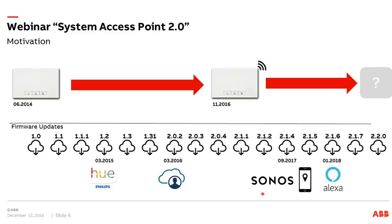However, we also have to say that these features are taxing the resources of the Free at Home system access point — from processing and from memory. So we said we have to introduce new hardware, to lay the foundation for continuous improvement, because we were coming to our limits. We need a new system access point with better hardware — more power, let's say.